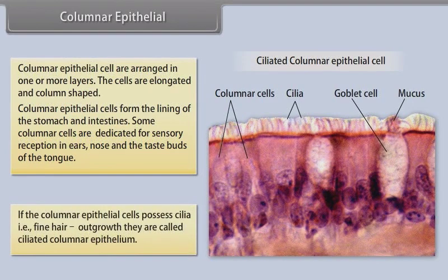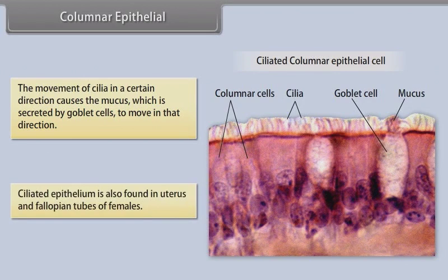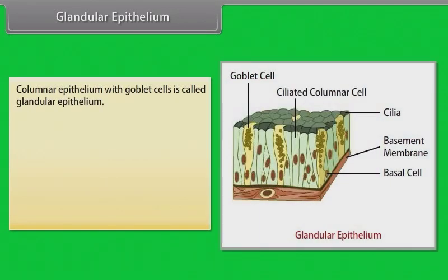If the columnar epithelial cells possess cilia, that is fine hair outgrowth, then they are called ciliated columnar epithelium. The movement of cilia in a certain direction causes the mucus, which is secreted by goblet cells, to move in that direction. Ciliated epithelium is also found in the uterus and fallopian tubes of females. Columnar epithelium with goblet cells is called glandular epithelium.